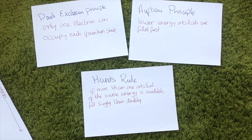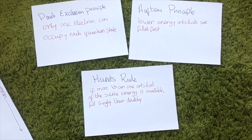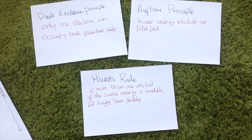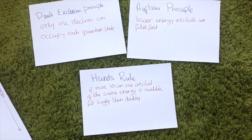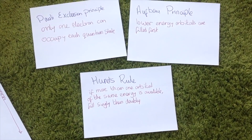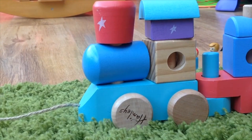And Hund's rule, which says that if you have more than one orbital of the same energy available, you fill singly and then you fill doubly.